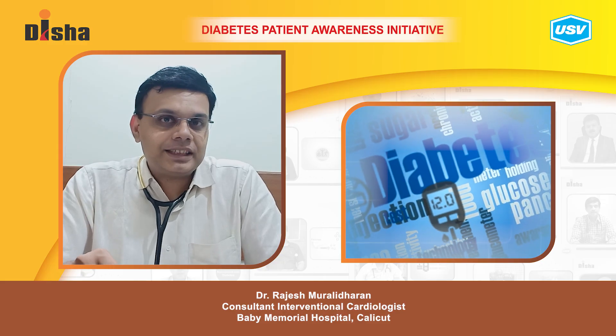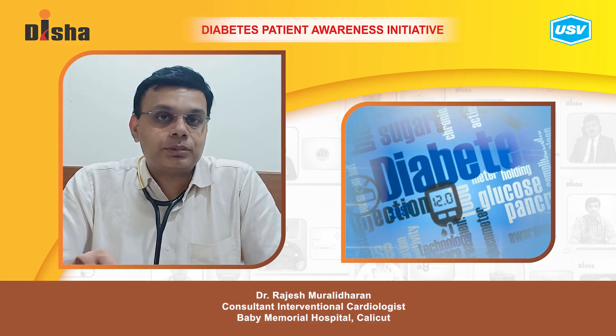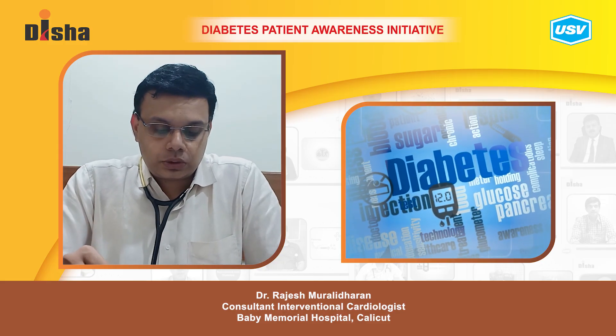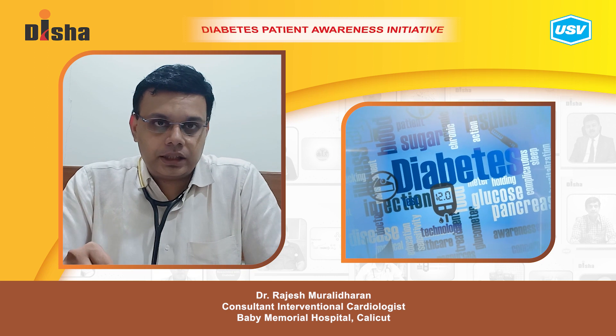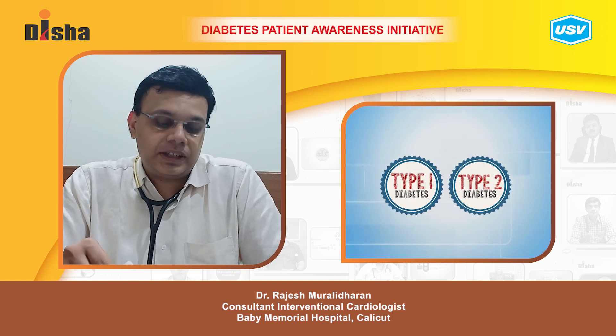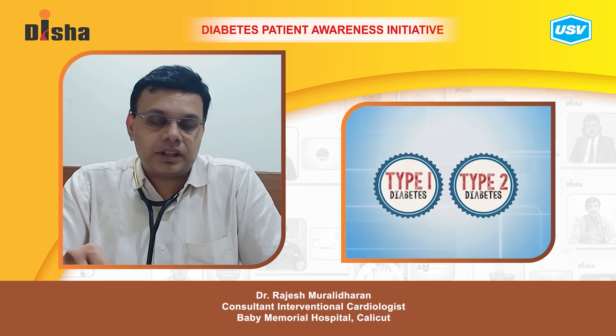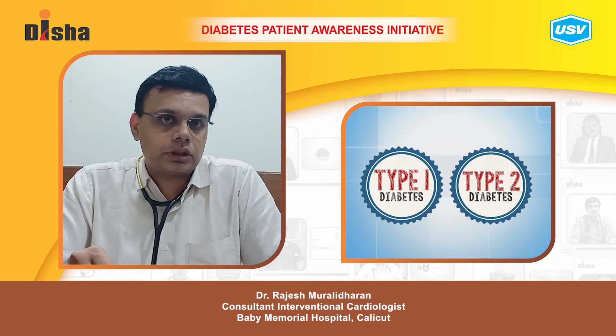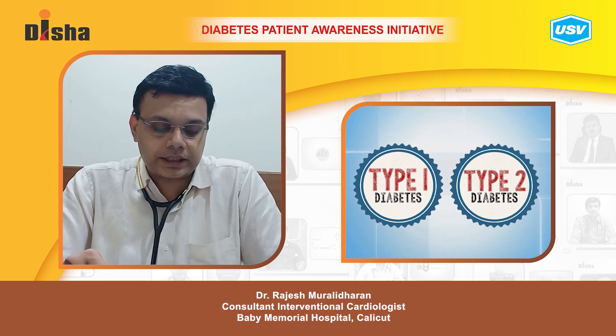Today we will be discussing about the types of diabetes. There are basically two types of diabetes: type 1 diabetes and type 2 diabetes. There are of course many other types which we will not be discussing.